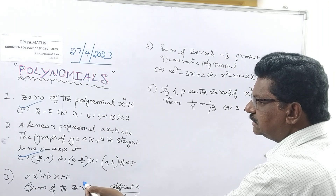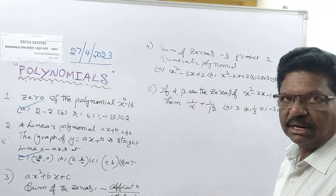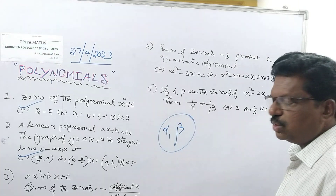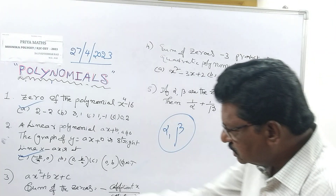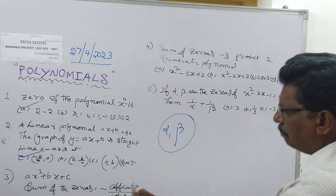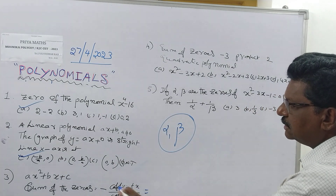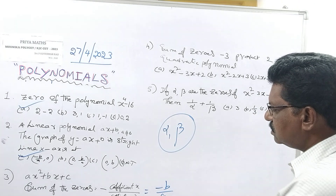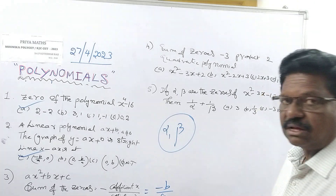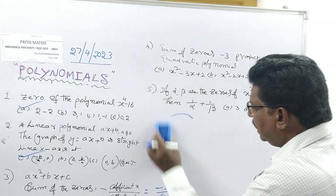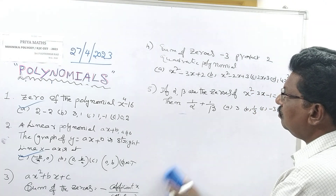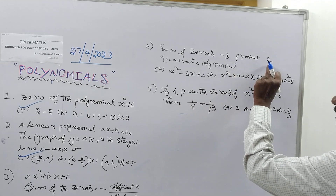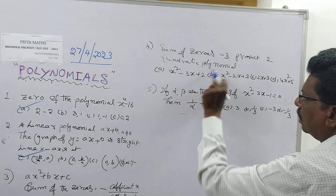AX squared plus BX plus C is the quadratic polynomial. Let alpha and beta be the zeros of the polynomial. Sum of the zeros = minus B by A, product of the zeros = C by A. These are the formulas. Next: sum of the zeros is minus 3, product is 2 — find the quadratic polynomial.